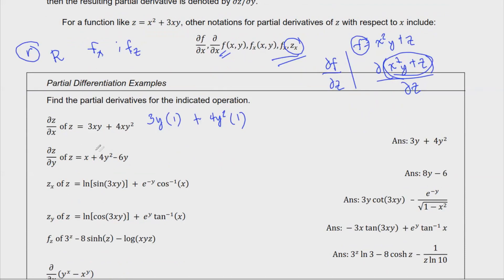For number two, we differentiate with respect to y, so any variable that is not y is treated as a constant. The first term becomes 0. We differentiate the remaining terms: we get 8y, then minus 6. That's a fairly simple expression.